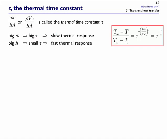If the time constant is big, the thermal response is slow — it takes a long time to make 63% of its temperature response. A large mass or large specific heat capacity gives a big time constant, meaning the material requires a lot of energy to change temperature by one degree. A large heat transfer coefficient h — being in the denominator — gives a small time constant and very fast thermal response. It's useful to write mass as density times volume, so the volume-to-area ratio appears as a key characteristic determining how quickly an object responds thermally.